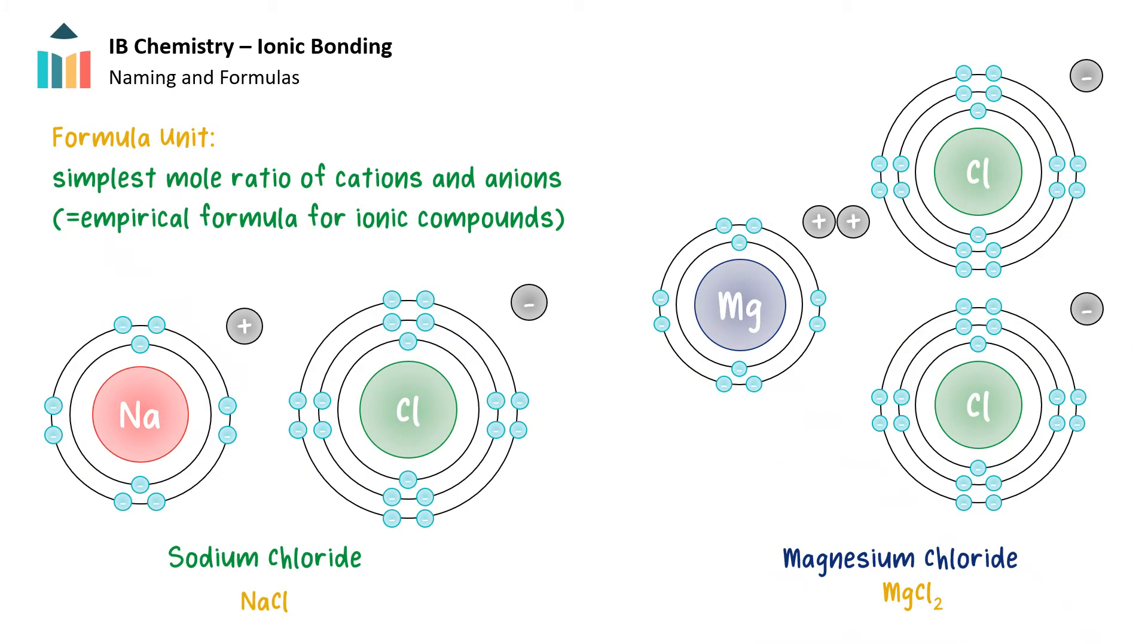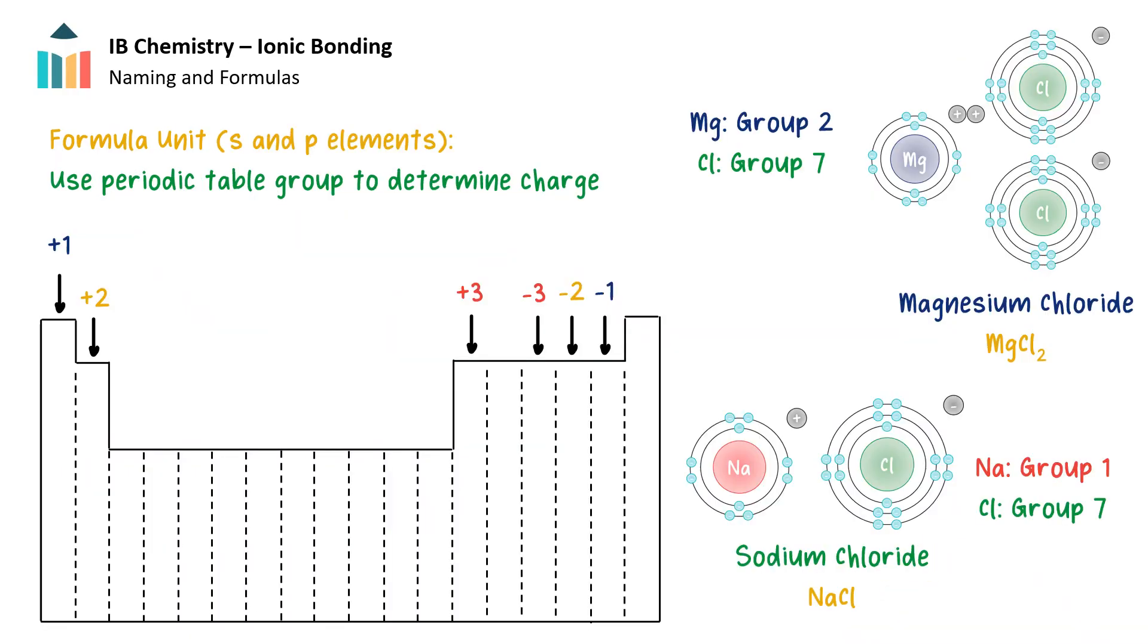To determine the formula of an ionic compound, we look at the simplest mole ratio of the cations and anions. This is the empirical formula for the compound and is known as a formula unit. We know an ion forms when a neutral atom gains or loses electrons.